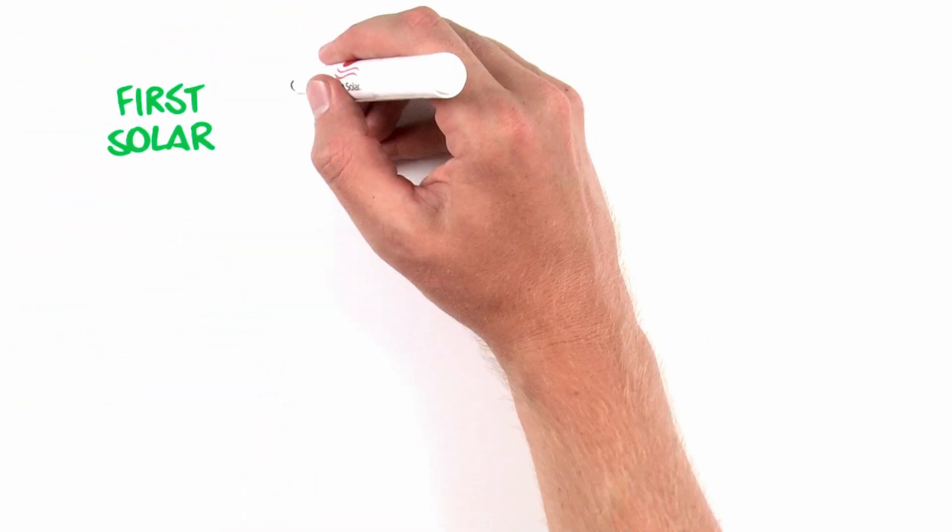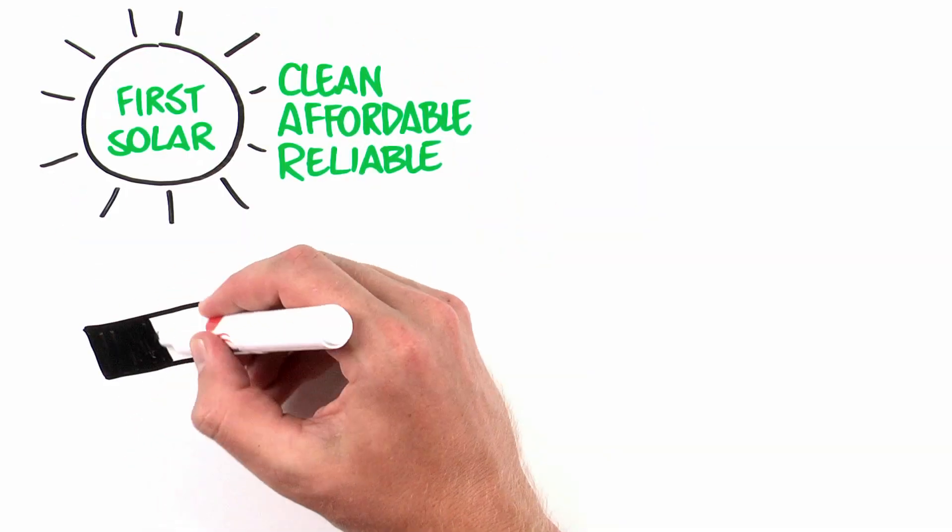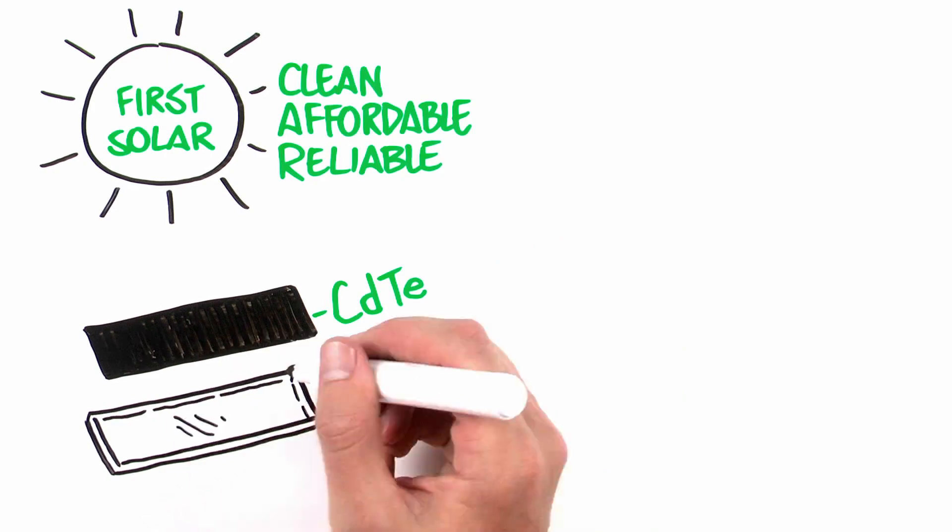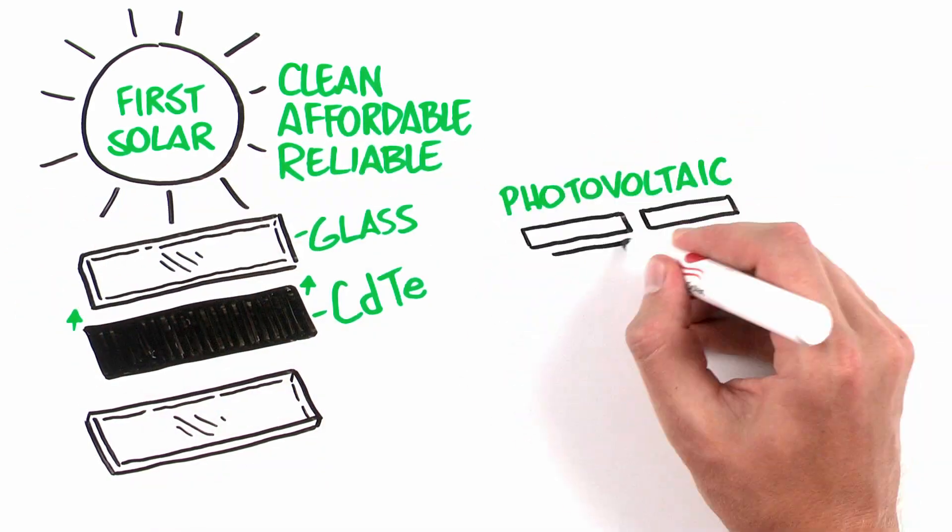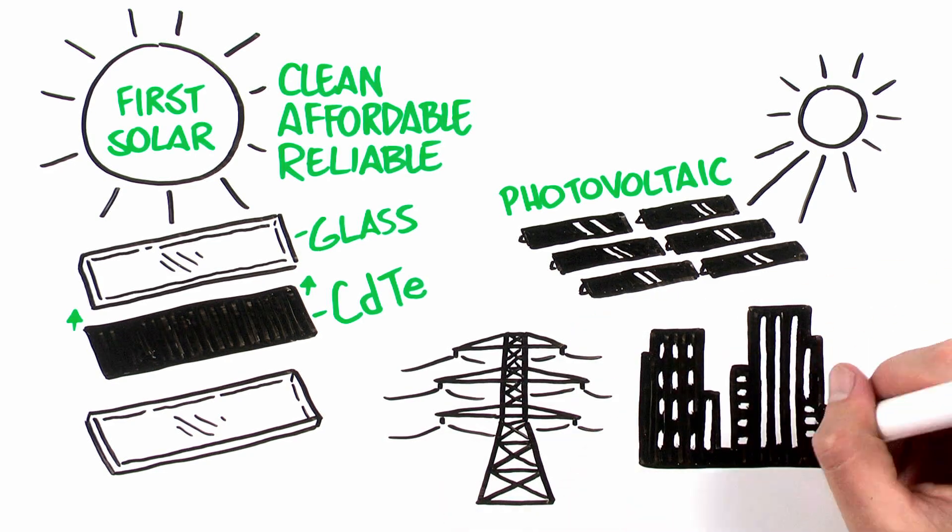First Solar's mission is to provide clean, affordable, and reliable solar electricity. Using a thin film of cadmium telluride in a safe recyclable glass module, our photovoltaic technology is transforming solar power into a mainstream energy source.